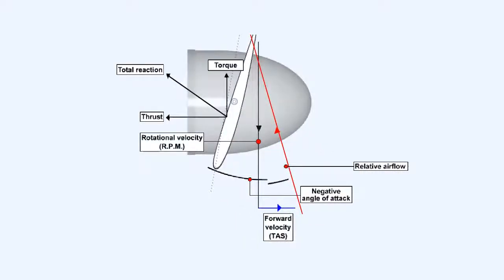Propellers which can have their pitch angle made even more negative are known as fully reversing propellers. As the power lever is moved further rearwards into the reverse pitch range, the blades move into the negative pitch position. The reversed total reaction produced now increases. This exerts increased load on the engine so engine power is increased in order to maintain a constant RPM. The engine power and reverse airflow through the propeller is now being used to slow the aircraft down. This condition is known as power-on braking.